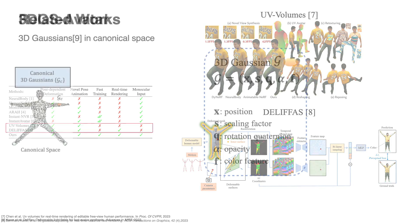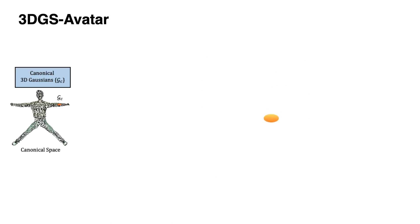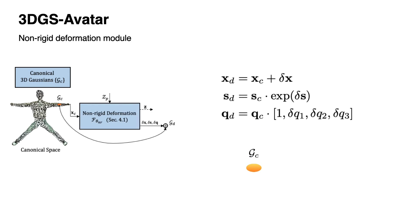We now explain the pipeline of our method. We first initialize a set of 3D Gaussians in canonical space, with each Gaussian storing the listed properties. The canonical Gaussians are first propagated through a non-rigid deformation module to model pose-dependent cloth deformation and output offsets to the Gaussian position and covariance.